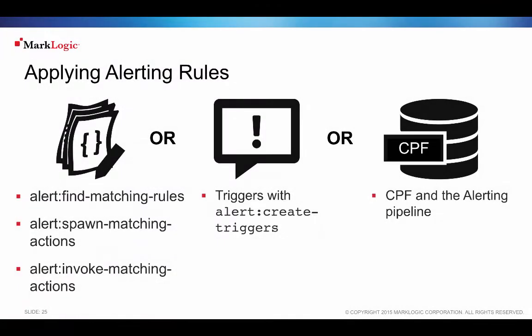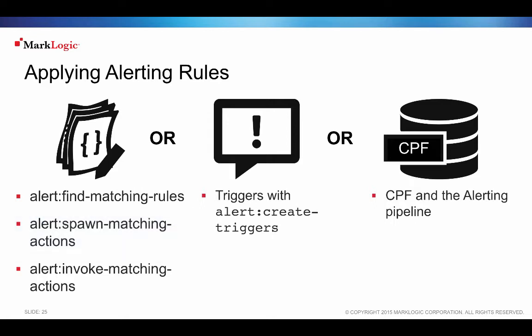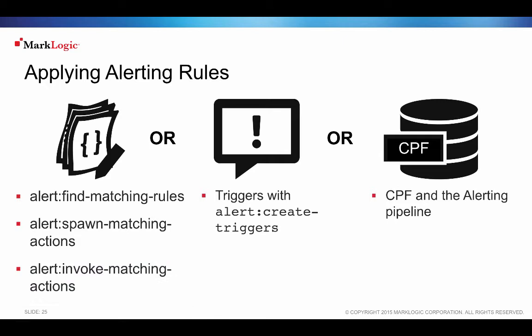Rules can be applied by calling alert functions, creating triggers, or using content processing framework's alerting pipeline. The findMatchingRules function returns a list of rules that match a given document. spawnMatchingActions spawns tasks on the MarkLogic task server to asynchronously execute all actions for rules matching a given document. invokeMatchingActions is similar to spawnMatchingActions except actions are executed synchronously. All alert API functions can be called from either JavaScript or XQuery.